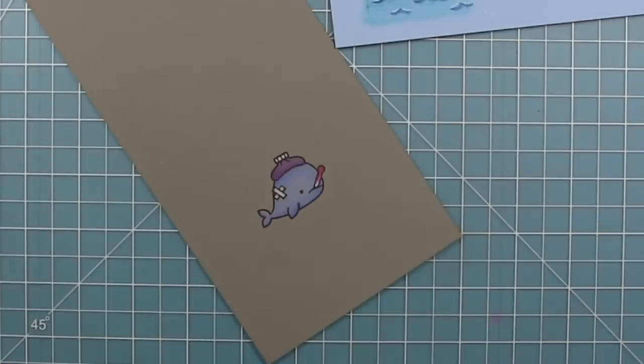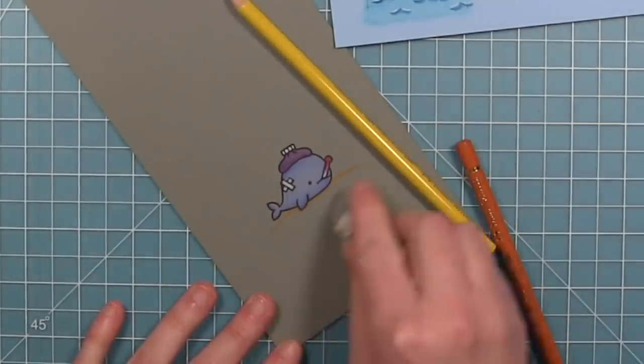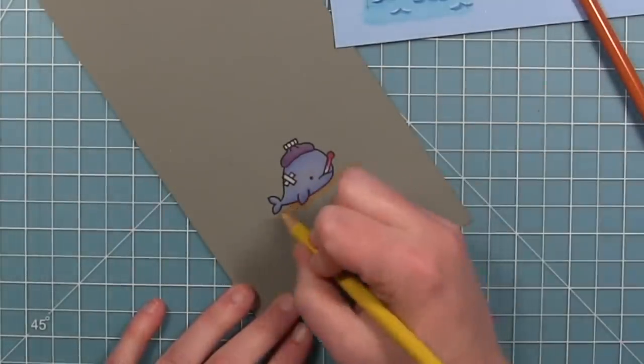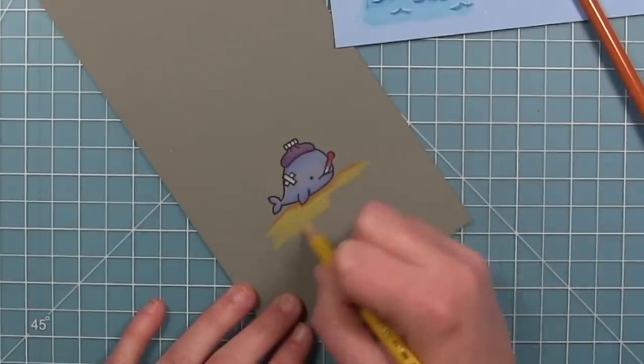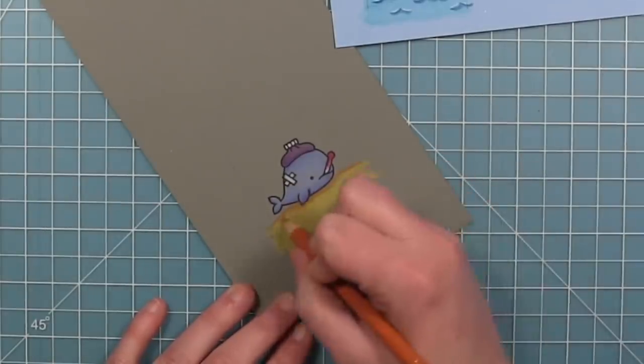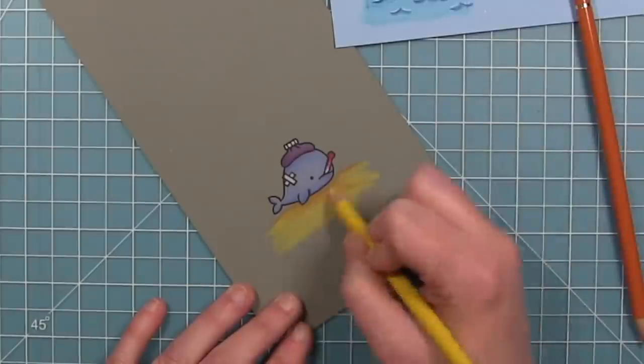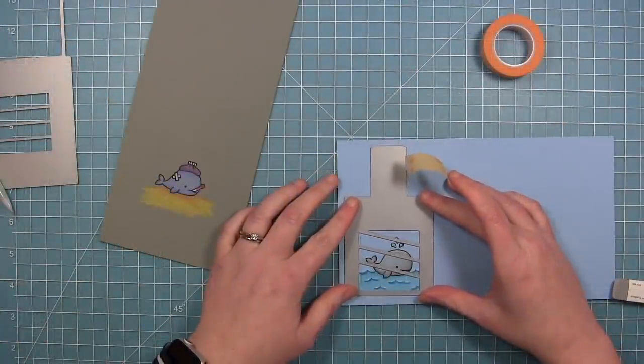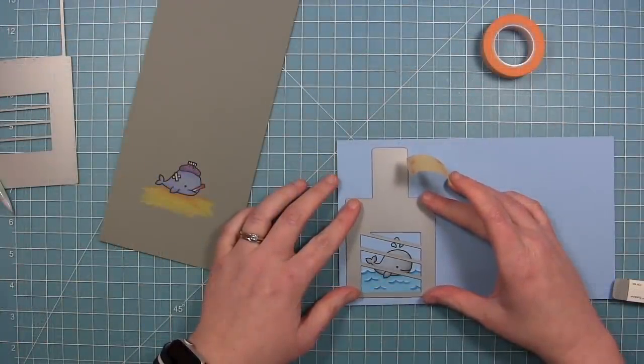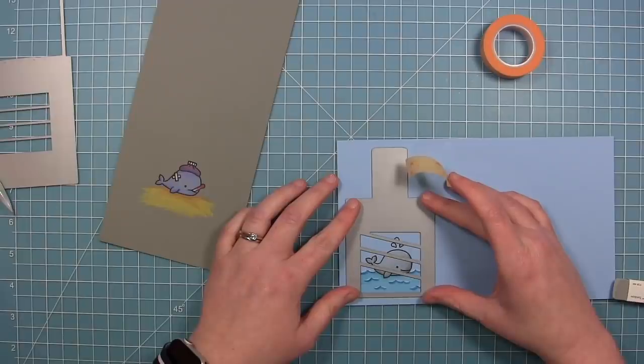And then for the sick whale here, I'm going to make him look like he's kind of not feeling well, so he's going to be sitting on the ocean floor basically. So it kind of made it look like sand. You can color past that square that we drew obviously because that'll go off the scene and behind the frame.